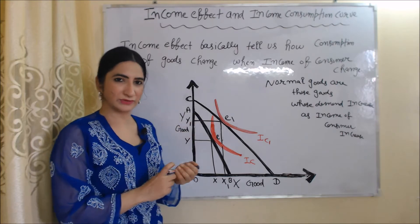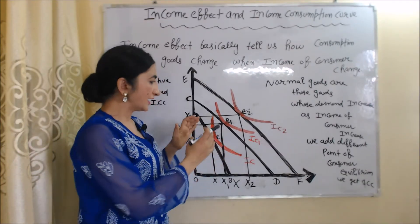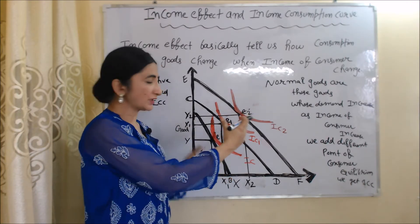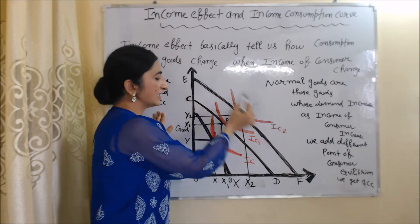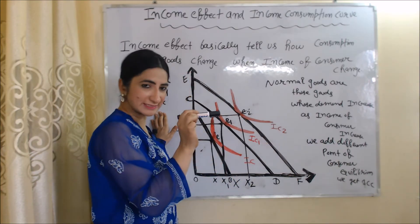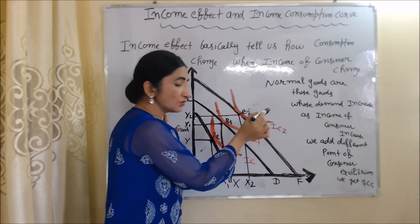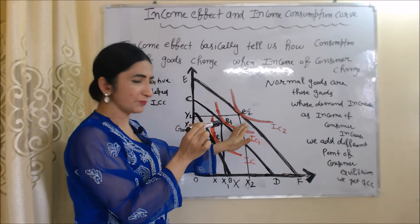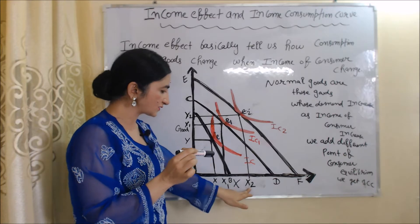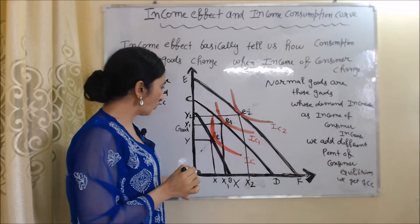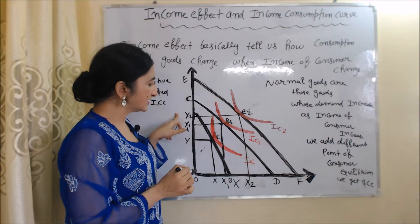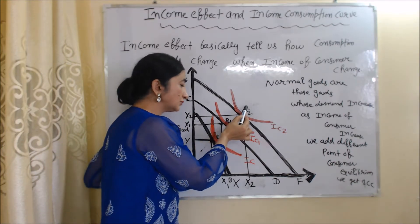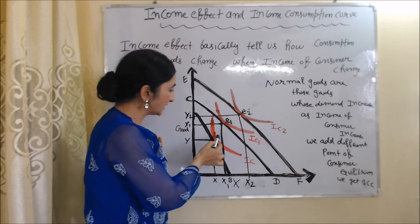Now suppose income increases again. As income increases, the budget line shifts outward from CD to EF. EF is our new budget line, IC2 is the new indifference curve, and E2 is the new consumer equilibrium point. At this equilibrium point, the consumer is buying OX2 quantities of X good and OY2 quantities of Y good. The movement from E to E1 and then to E2 shows the income effect.